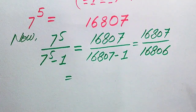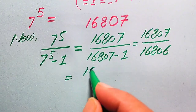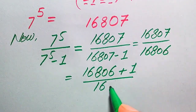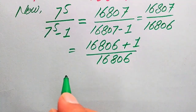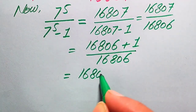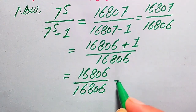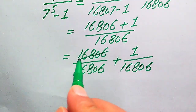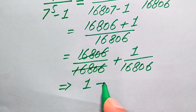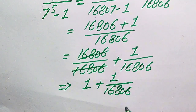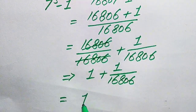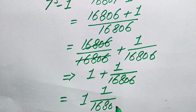We break the numerator: 16807 is written as 16806 plus 1, divided by 16806. Splitting the fraction gives 16806 divided by 16806 plus 1 divided by 16806. The 16806 over 16806 cancels to give 1, so the result is 1 plus 1 over 16806, which as a mixed fraction is 1 and 1/16806.